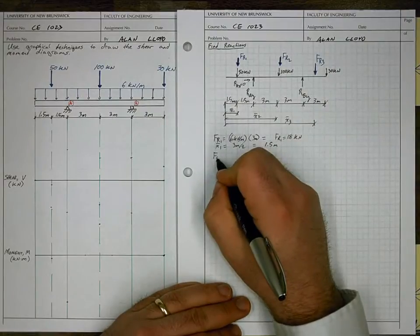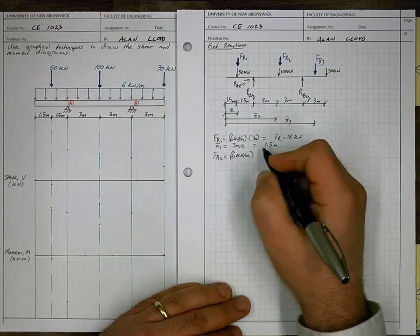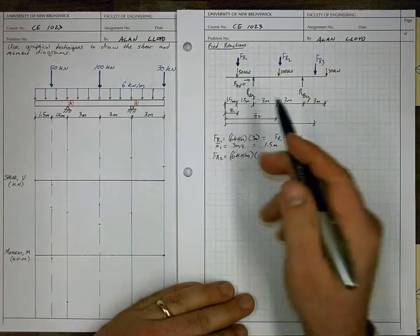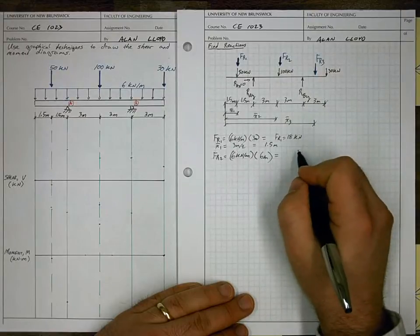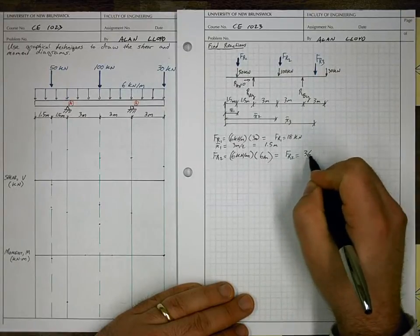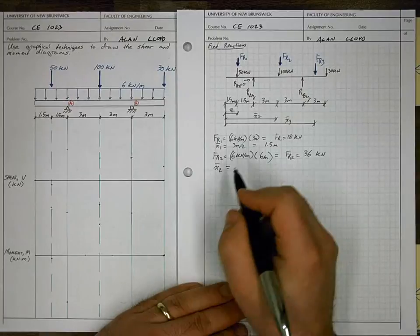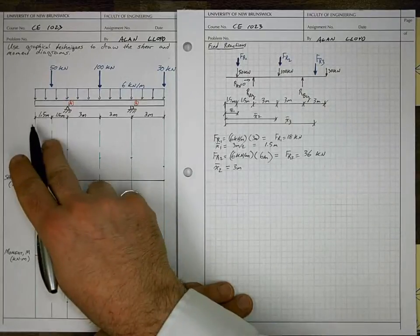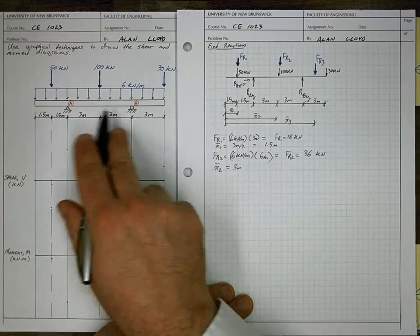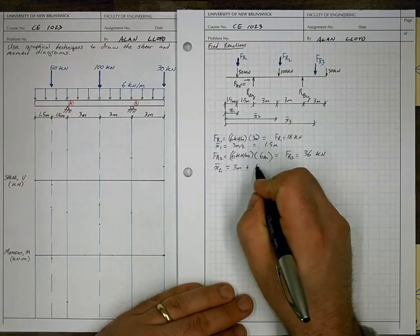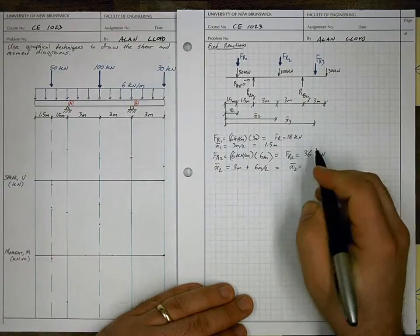We can find FR2, and that's equal to the magnitude, 6 kN per meter, multiplied by the length over which it's applied between A and B, which is 6 meters. If we multiply that out, we get FR2 equal to 36 kN. X̄2 is equal to 3 meters — the distance from 0 to A — plus the distance to the centroid of the rectangular load between A and B, so 3 meters plus 6 meters over 2. This gives X̄2 equal to 6 meters.